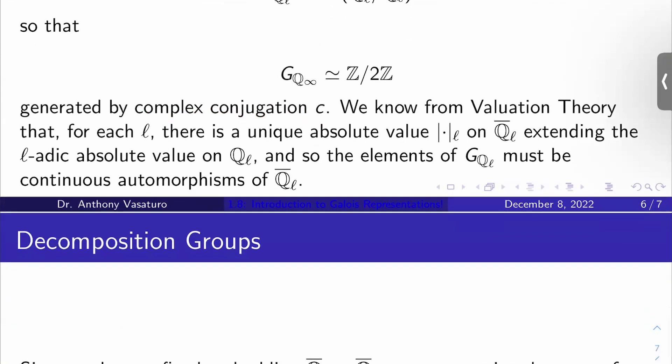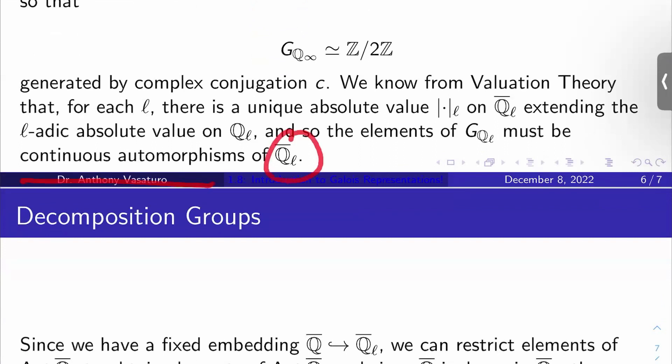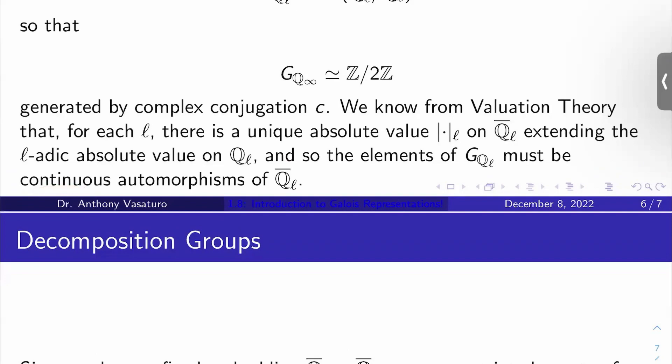So I know from valuation theory that for each ℓ, there's a unique absolute value on Q-bar_ℓ extending the ℓ absolute value on Q_ℓ. Well, that tells me that the elements of this local Galois group here are actually just the continuous automorphisms of Q-bar_ℓ. So we actually get continuity by the uniqueness of this extension, essentially.